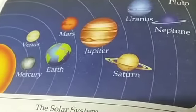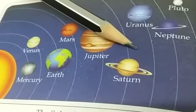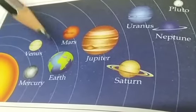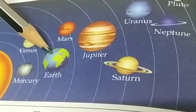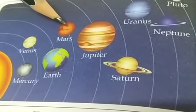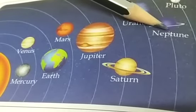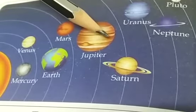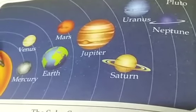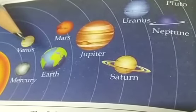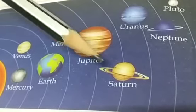Pluto was considered a planet before, but now it is no more considered a planet — it is called a dwarf planet. So the main planets are only eight. The first four planets — Mercury, Venus, Earth and Mars — are known as the inner planets because they are made up of rocks and have solid surfaces. The next four — Jupiter, Saturn, Uranus and Neptune — are called the outer planets because they are far away and made up of gases; they do not have a solid surface.